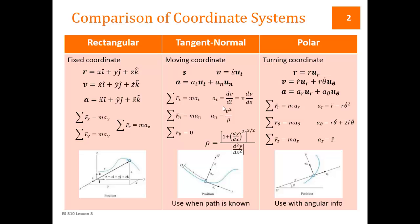We use rectangular coordinates primarily when we have straight line motion or projectile motion, where we understand the accelerations or the velocities or the positions as moving along one of these coordinate directions.